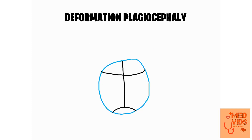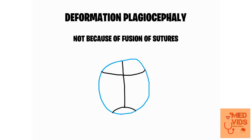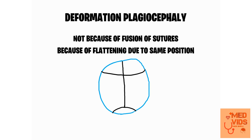Then we have deformational plagiocephaly. In this condition, all the sutures are intact and nothing has fused early — the sutures look normal. This is not because of early fusion of sutures but because of flattening of the skull due to the child lying in the same position for a long time, causing skull compression.